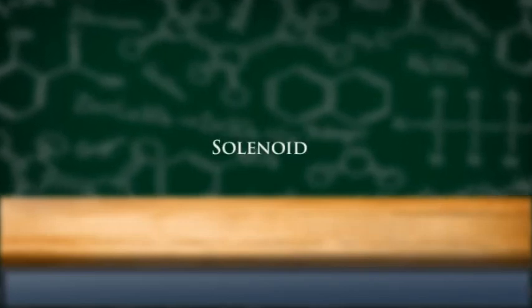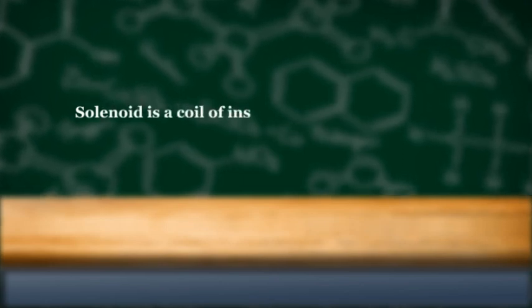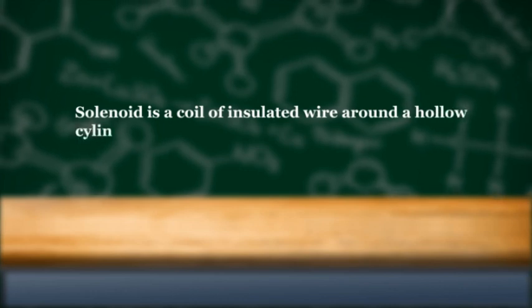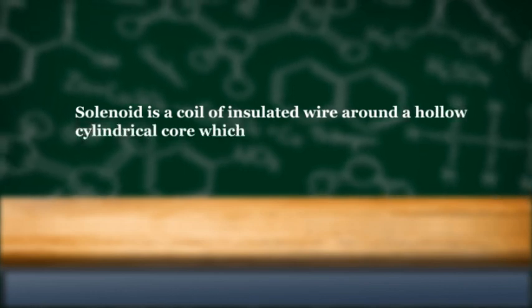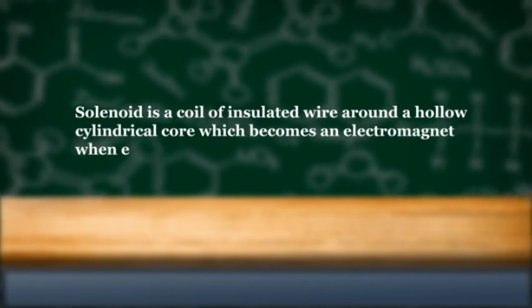Solenoid is a coil of insulated wire around a hollow cylindrical core which becomes an electromagnet when electric current flows through it.